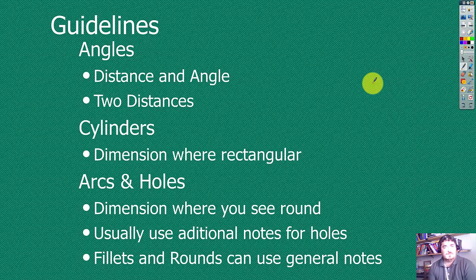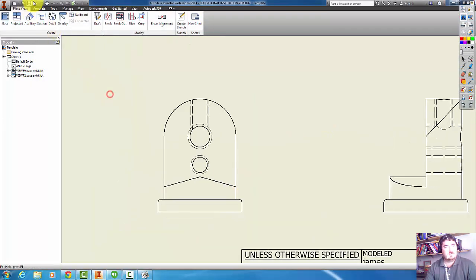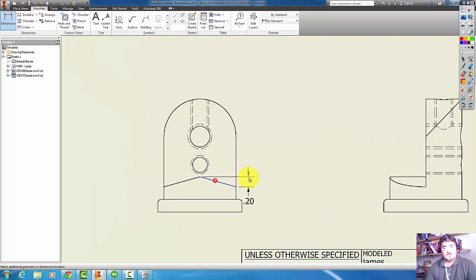Some simple guidelines: with angles, we can either dimension it with a distance and an angle, or with two distances. If I come back to here, I could give that dimension that way and a dimension that way, or I could give it a dimension that way and some kind of an angle. Kind of depends on what's important, if it's the distance that's important or the angle that's important.